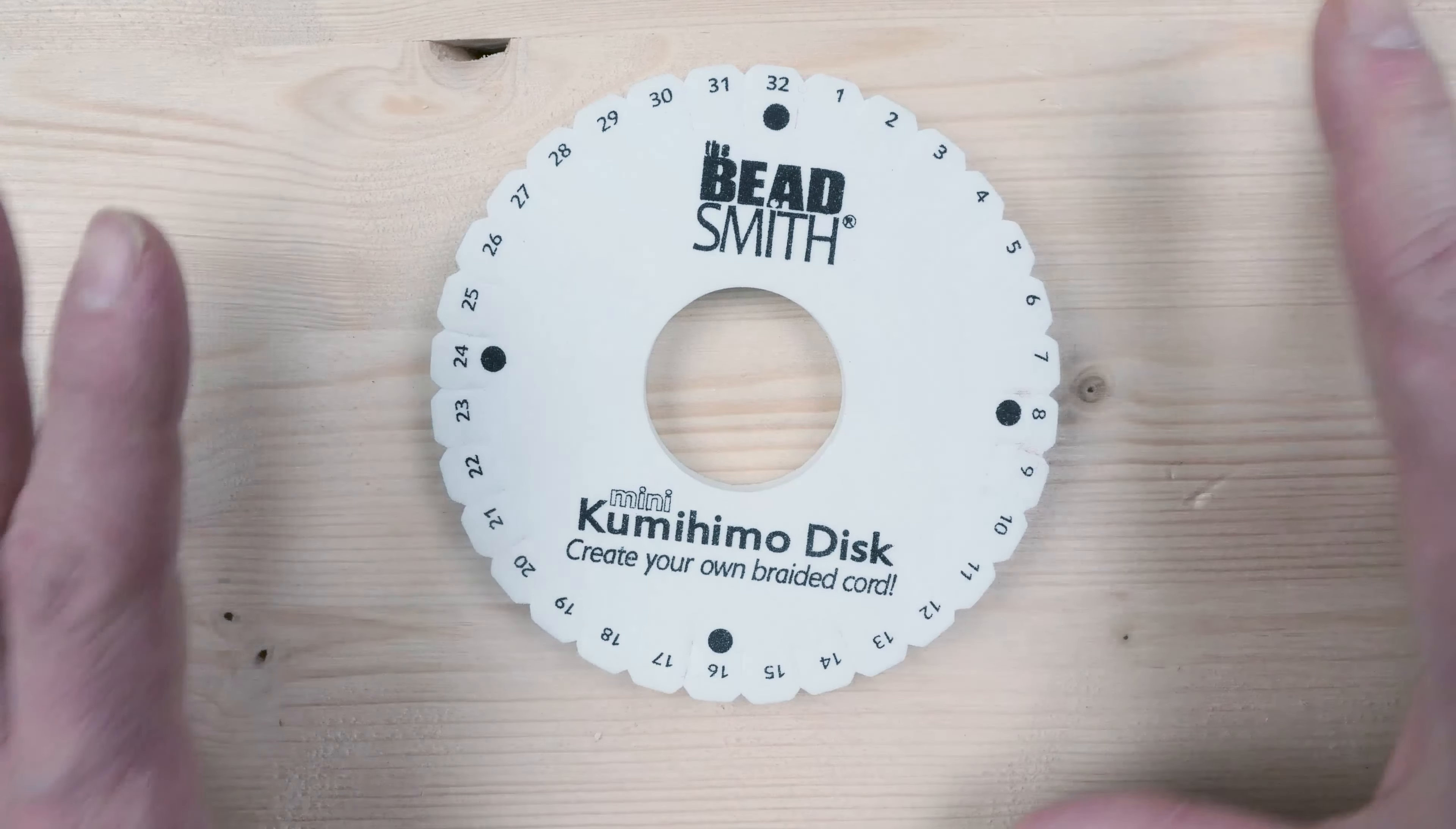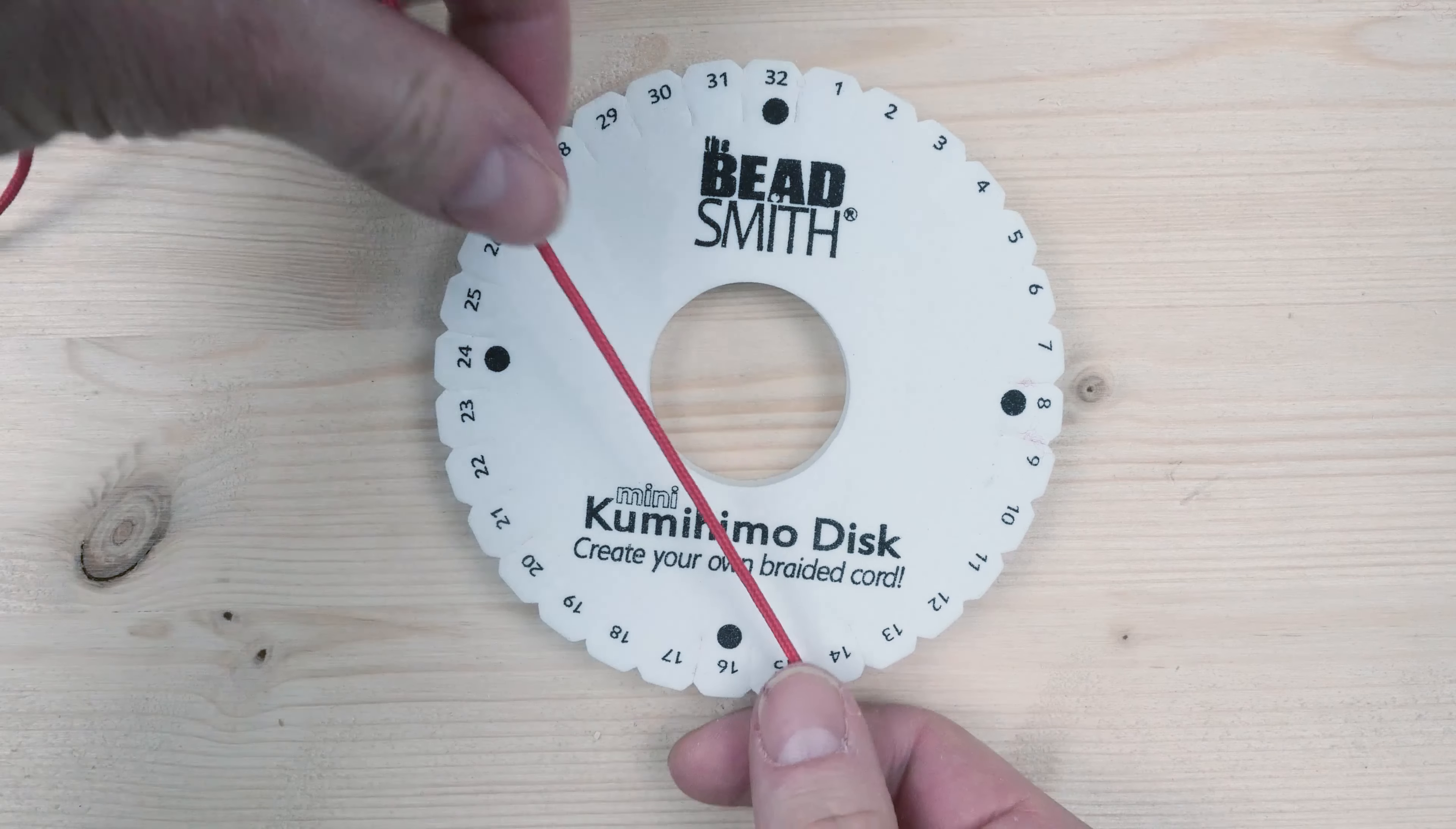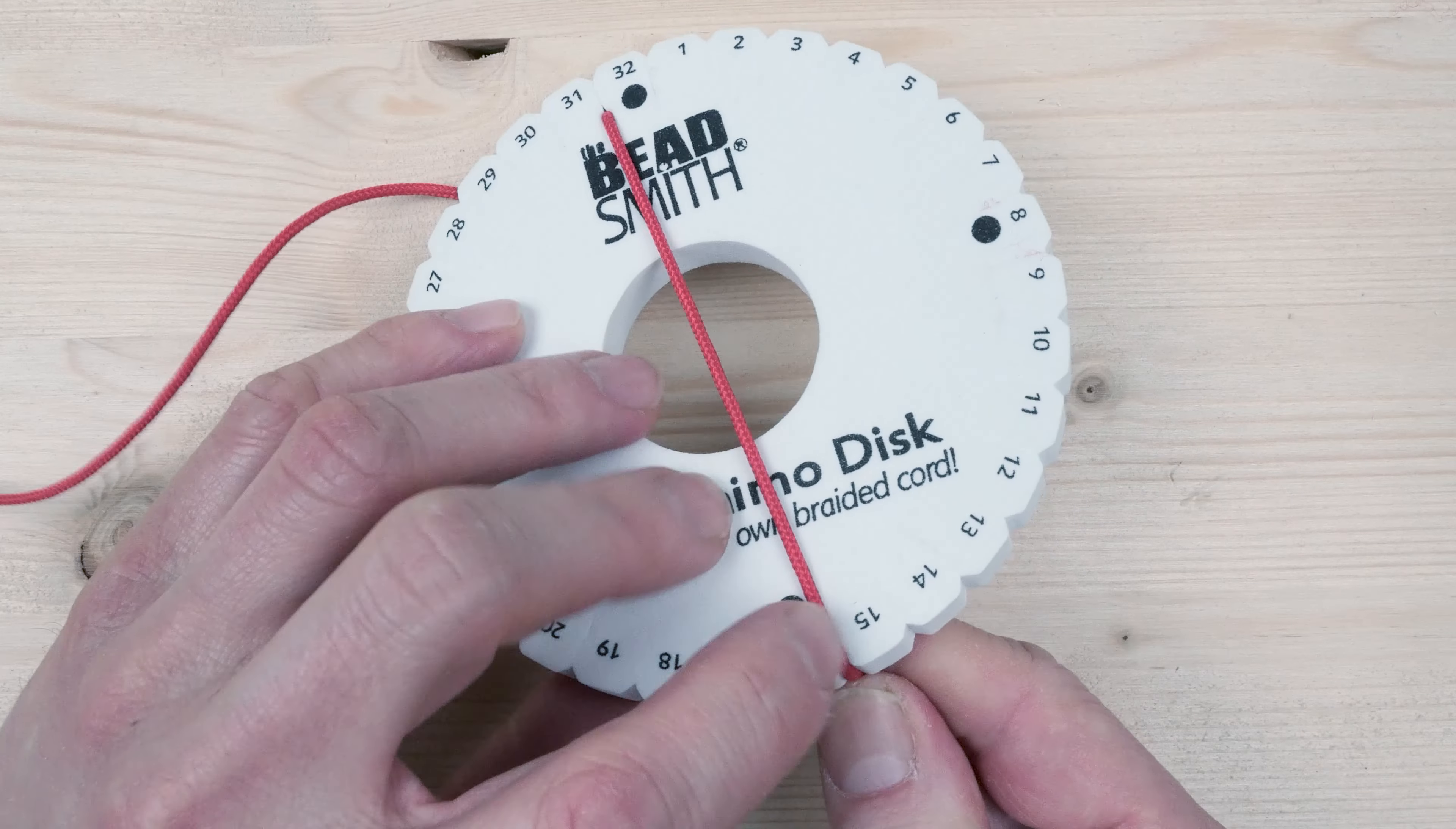So if we do a basic setup for a kumihimo braid, you take a cord and you set it up diagonally, so on the left here, and on the bottom here on the right.